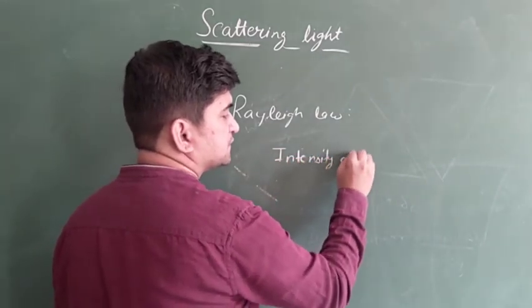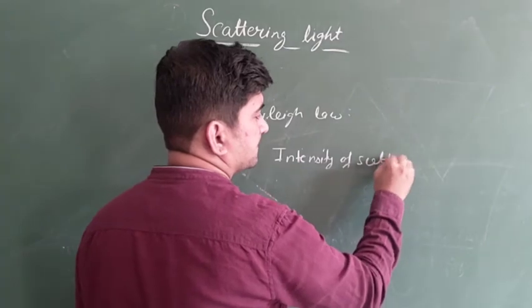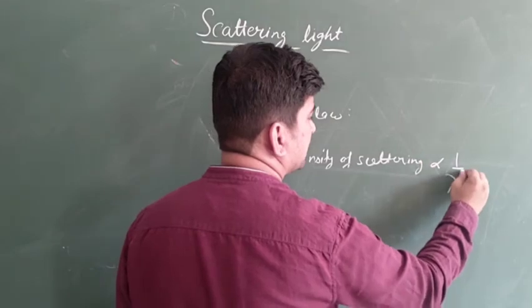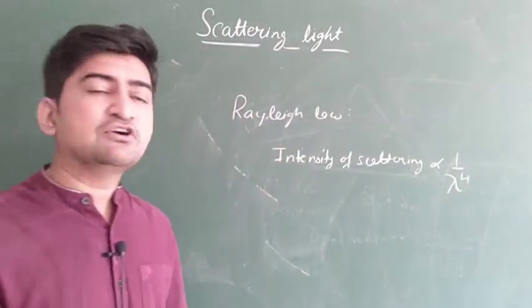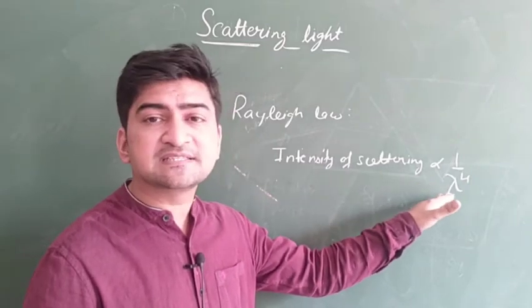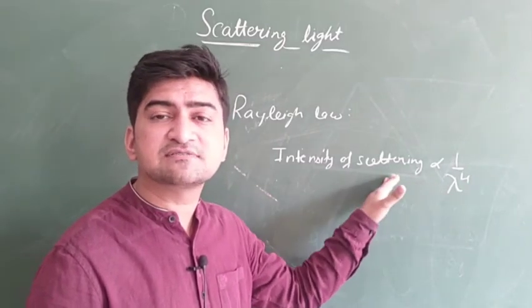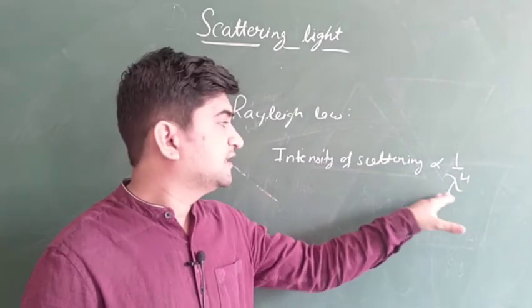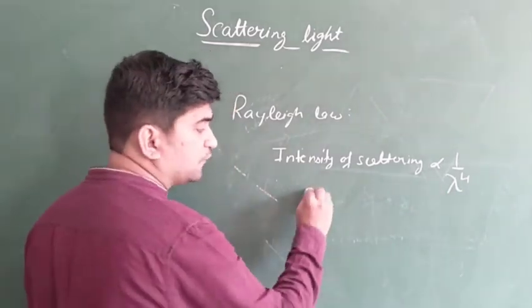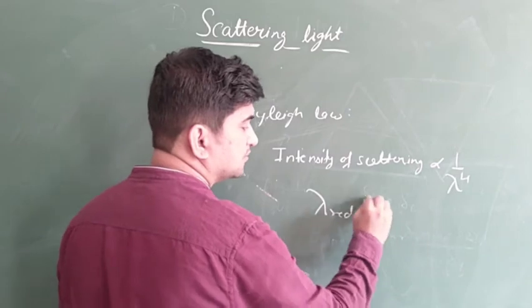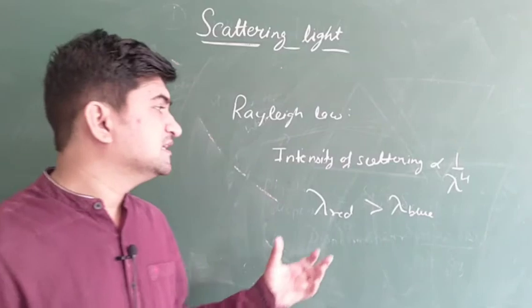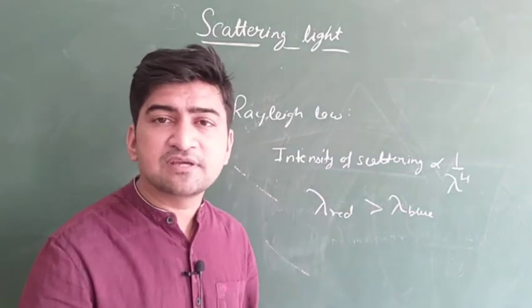The intensity of scattering is inversely proportional to wavelength to the power 4. This means which will have intensive scattering depends on wavelength. If lambda wavelength is more, scattering will be less, inversely. So lambda of which is more? Blue's lambda is less, that means blue light scatters more.